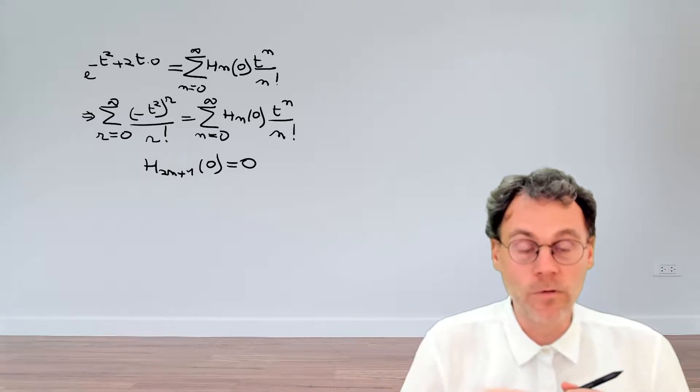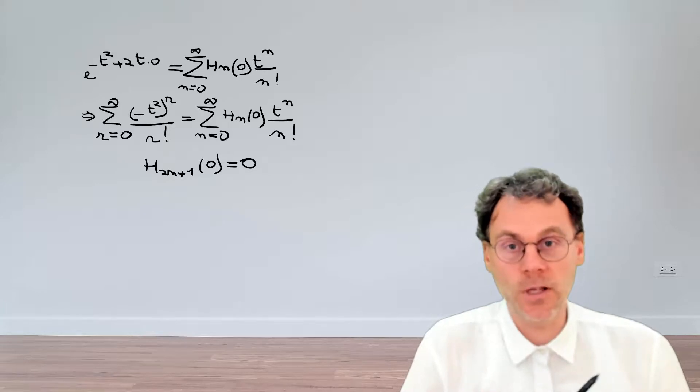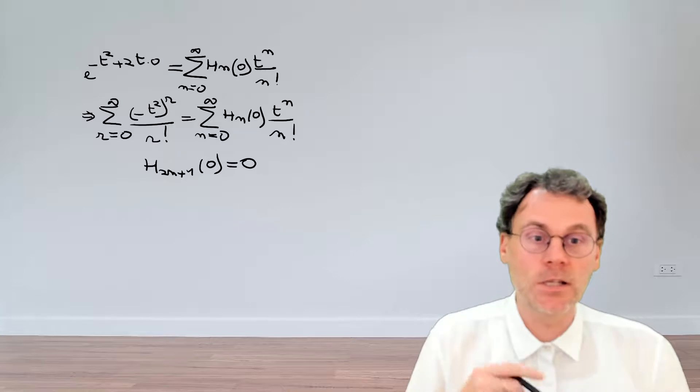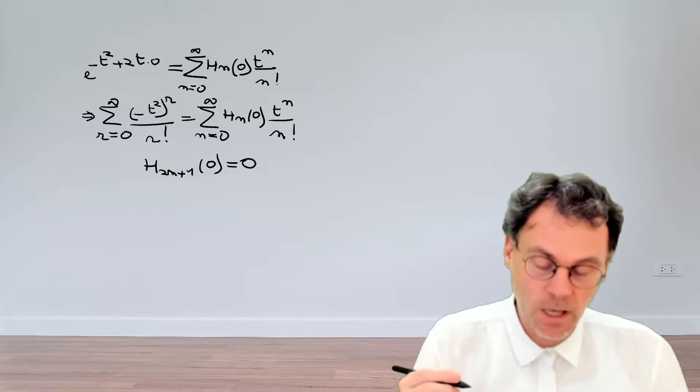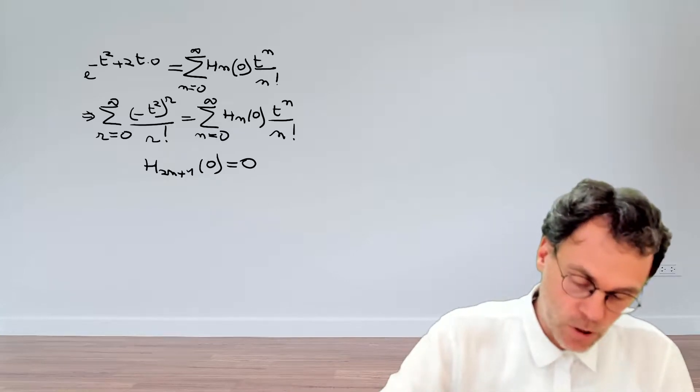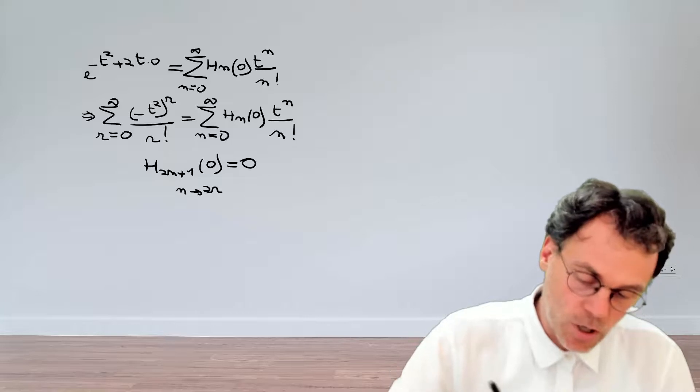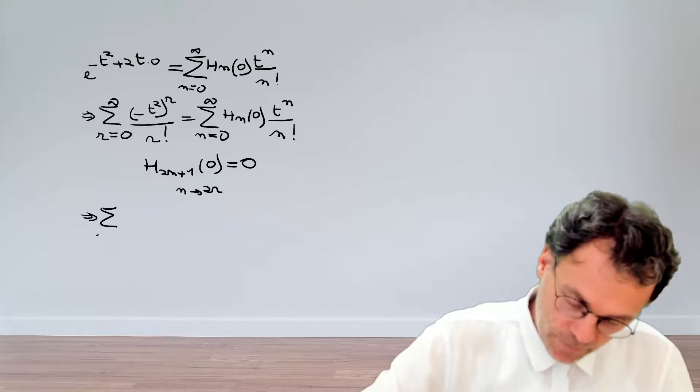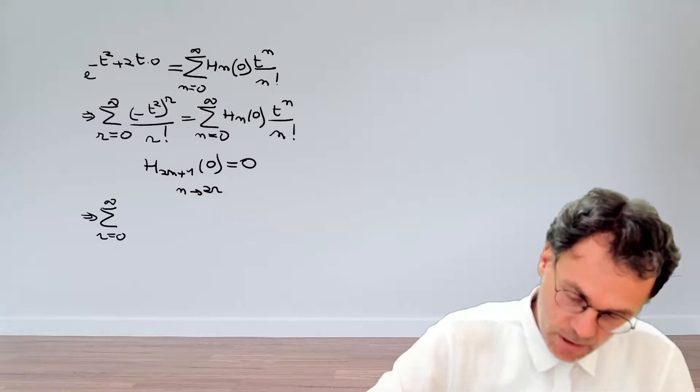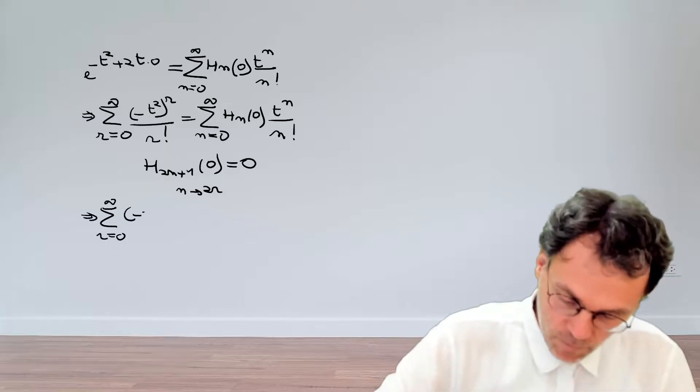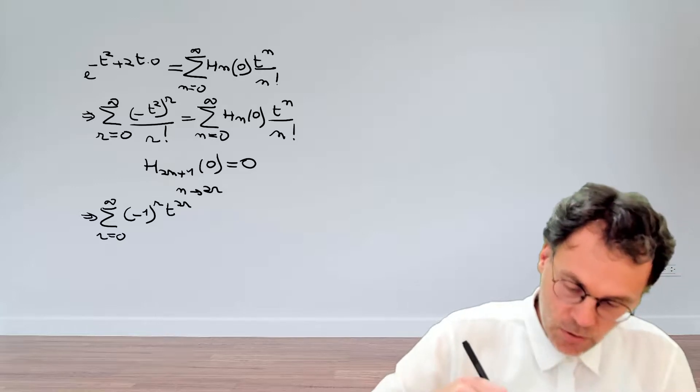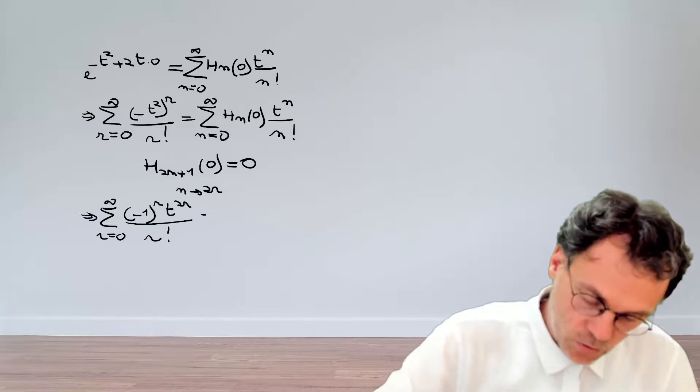Okay, moving on. What happens for even powers of t? Well, in order to be able to compare these two series expansions a little bit more easily, we're going to do a substitution where we will substitute n by 2r on the right-hand side expansion. So copying the left-hand side again, we have minus 1 to the power of r, t to the power of 2r, divided by r factorial.